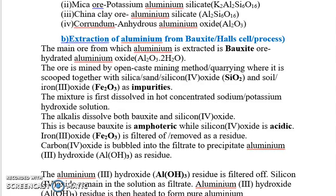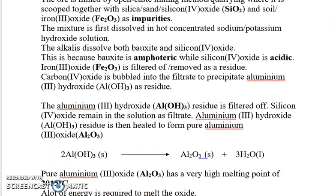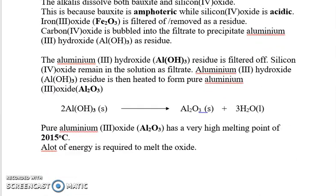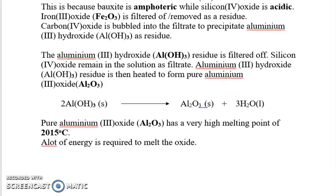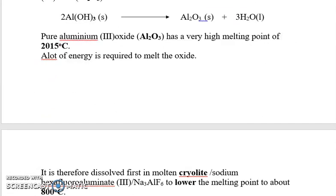Carbon dioxide is then bubbled into the filtrate to precipitate aluminium hydroxide as a residue. The aluminium hydroxide residue is filtered off. Silicon dioxide remains in the solution as the filtrate. The aluminium hydroxide residue is then heated to form pure aluminium oxide.